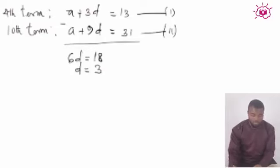Now substituting d equals 3 in the first equation, we have a plus 3 times 3 equal to 13, so that would be a plus 9 equal to 13.